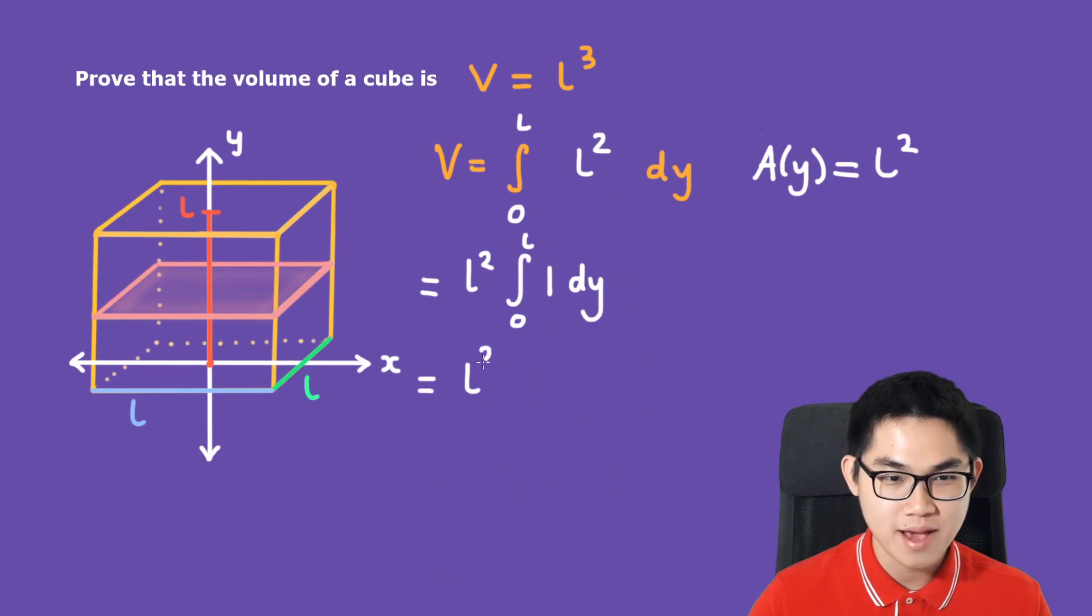This would be equal to L to the power of 2 times the antiderivative of 1. And what is the antiderivative of 1? Well, it's going to be Y. And we still have the upper and lower bounds, which is L and 0.